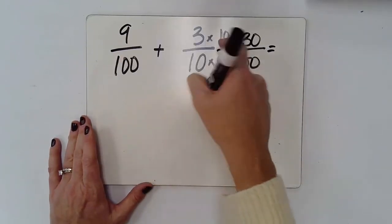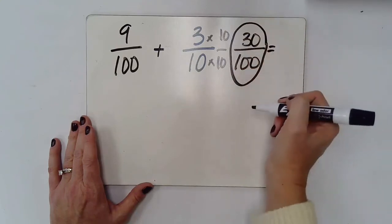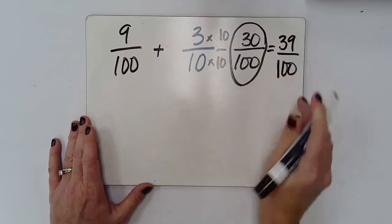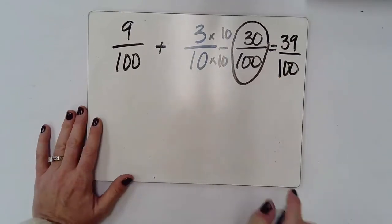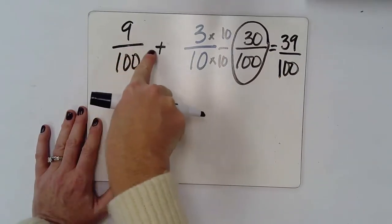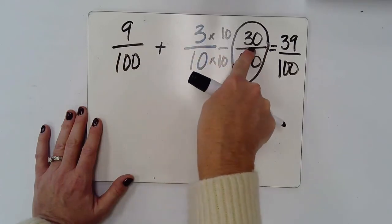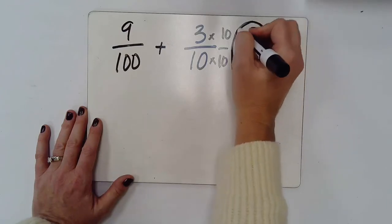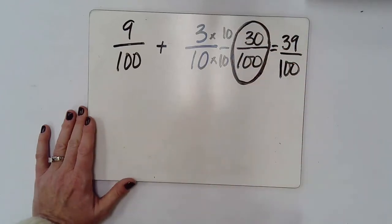So nine plus thirty is going to give me thirty-nine, and of course that denominator stays the same. So one tricky thing is remembering not to say nine plus three plus thirty. Because remember to think about what is your new equivalent fraction that you're working with, and then add from there.